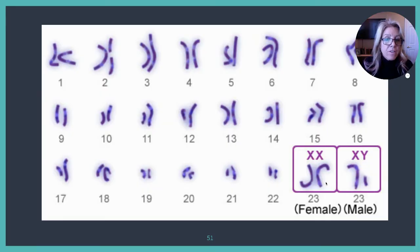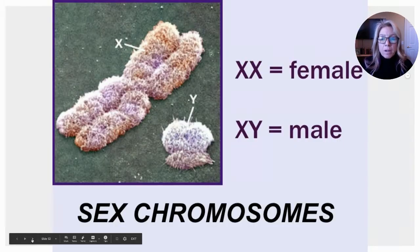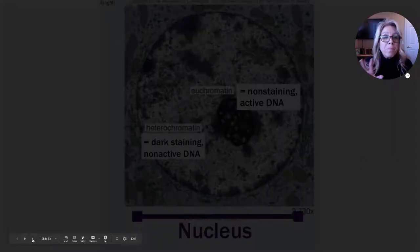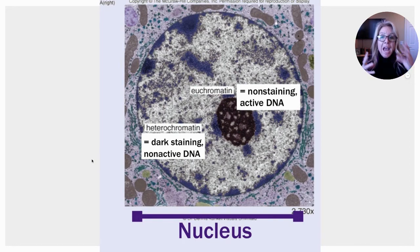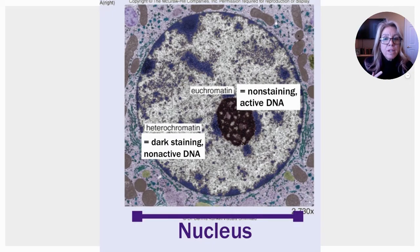In a karyotype we see 22 homologous pairs, and for females the 23rd pair is XX; for males it is XY. The sex chromosomes are the 23rd pair and are not homologous in males. Recall from our earlier chapter on mitosis: euchromatin is active DNA that's being transcribed and translated, while heterochromatin is tightly coiled, dark-staining DNA that's been put away. This entire structure is the nucleus, and the region inside is the nucleolus.